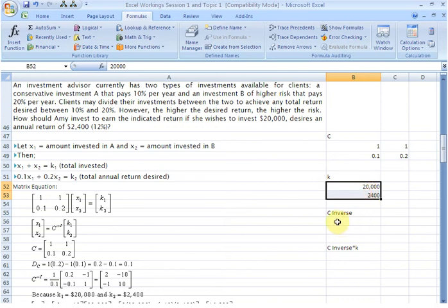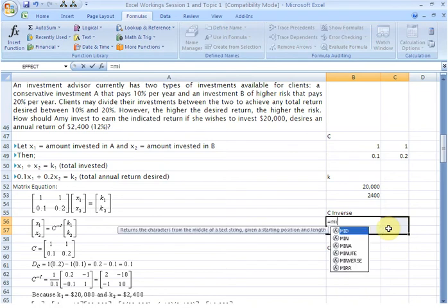Here in this space, we are going to find C inverse. So first we select the region where we want our inverse to go. It's going to be a 2 by 2 matrix. So we select a 2 by 2 space and then we type in the formula MINVERSE and we supply the array...